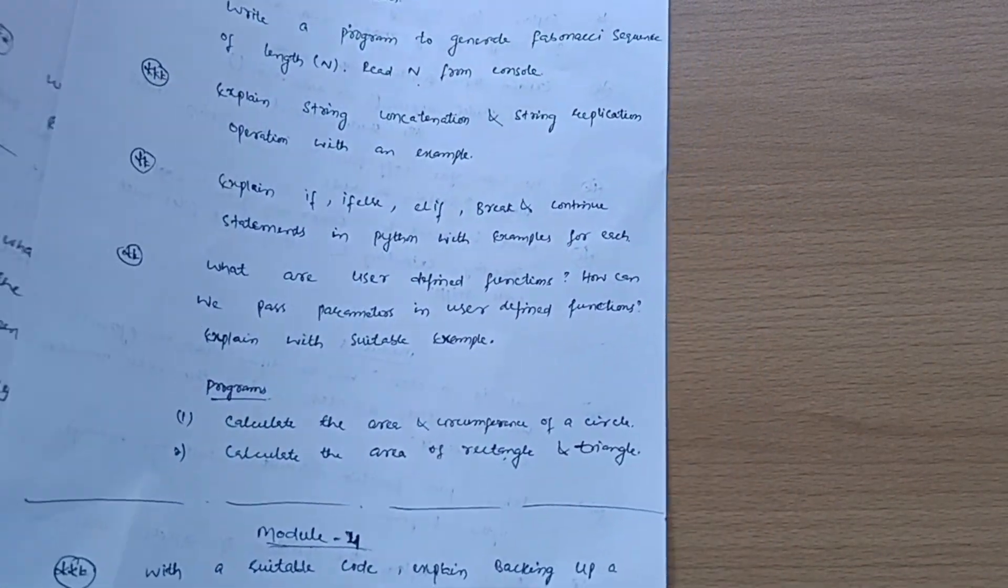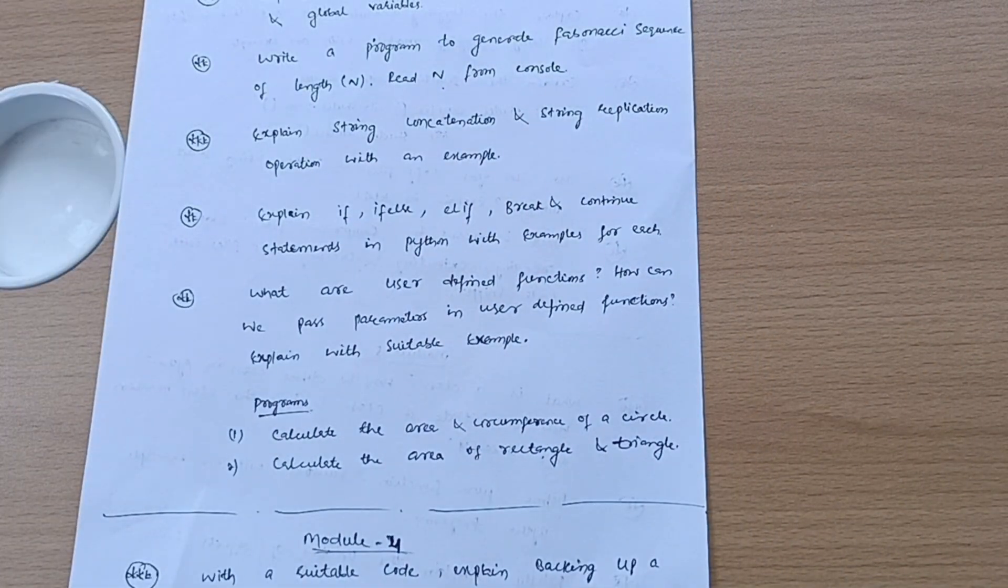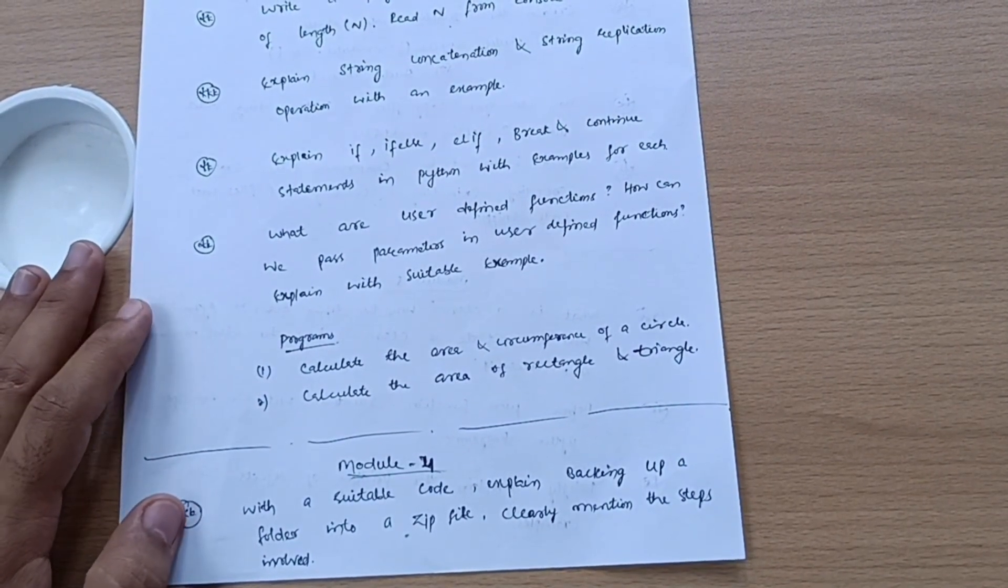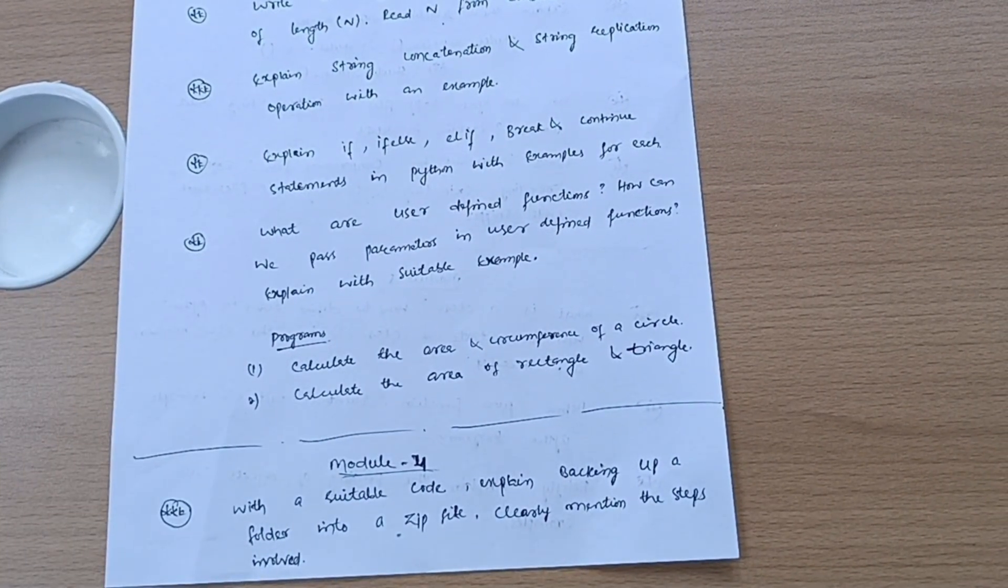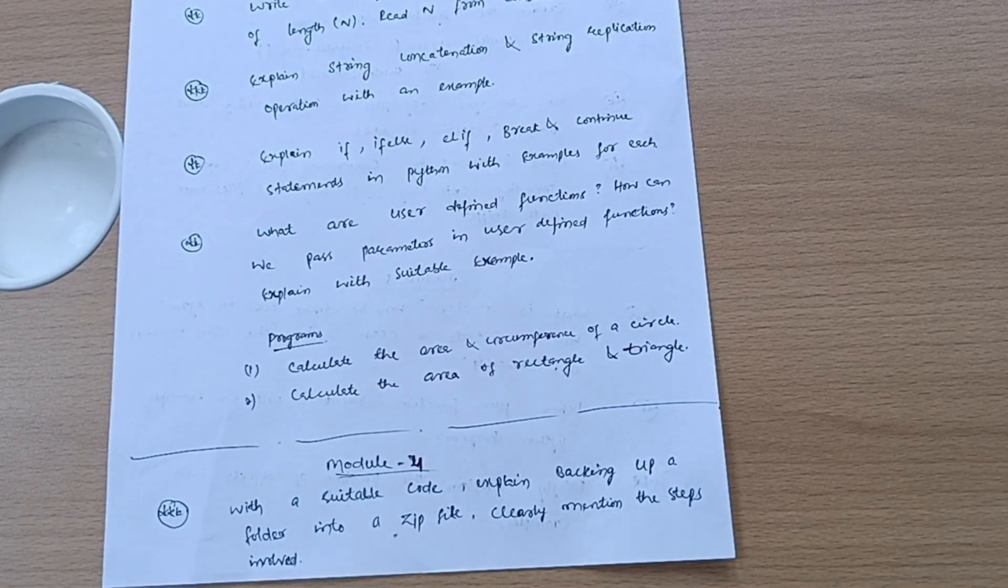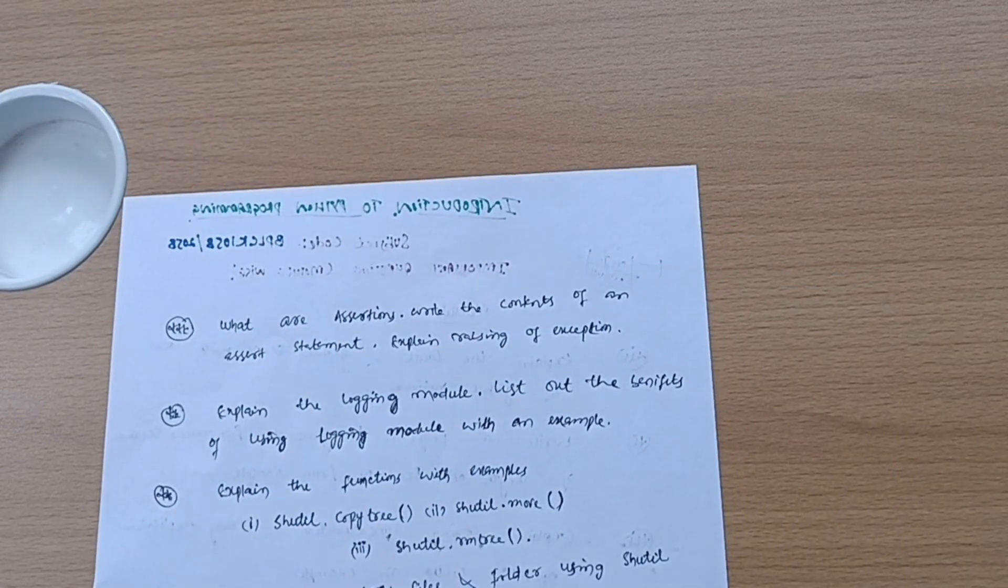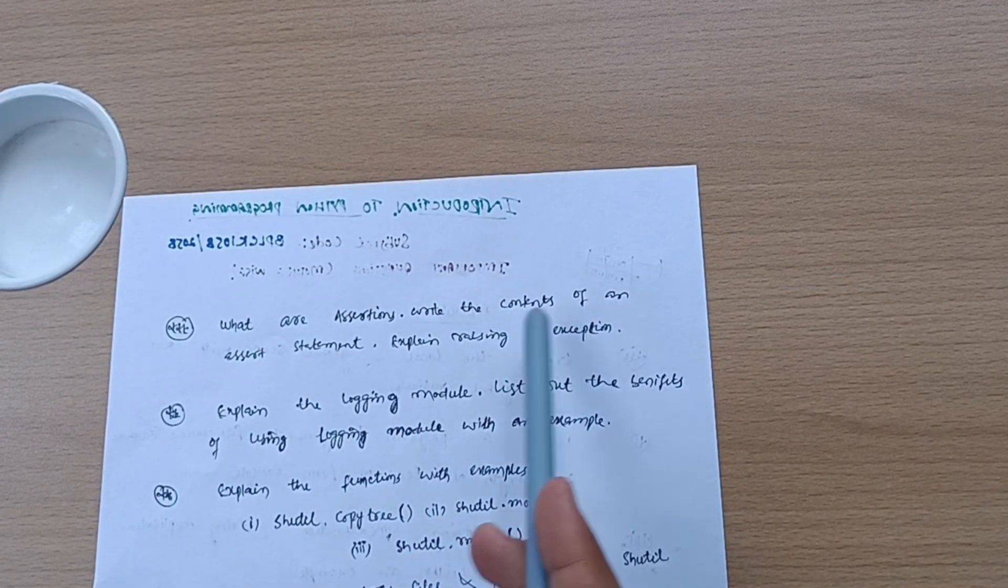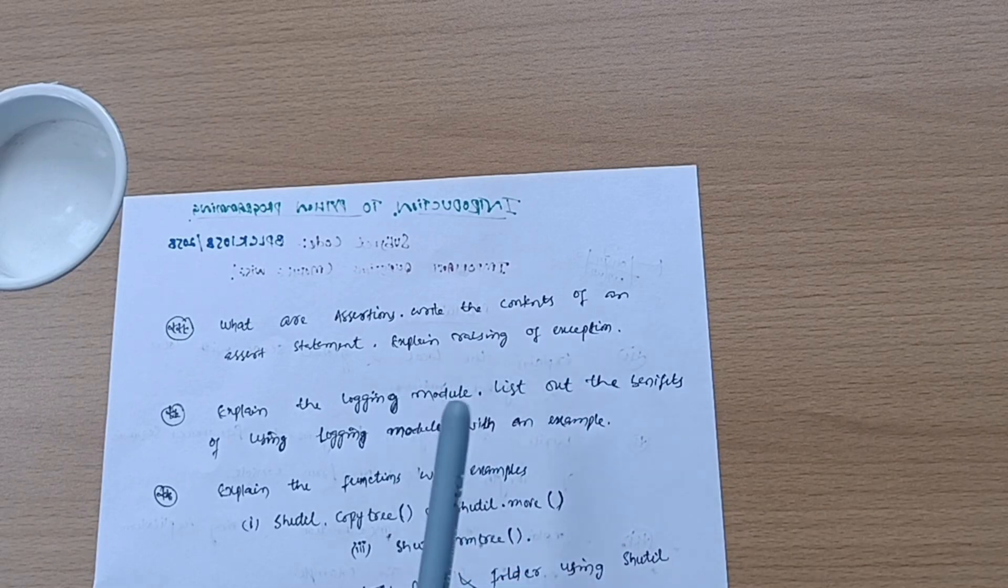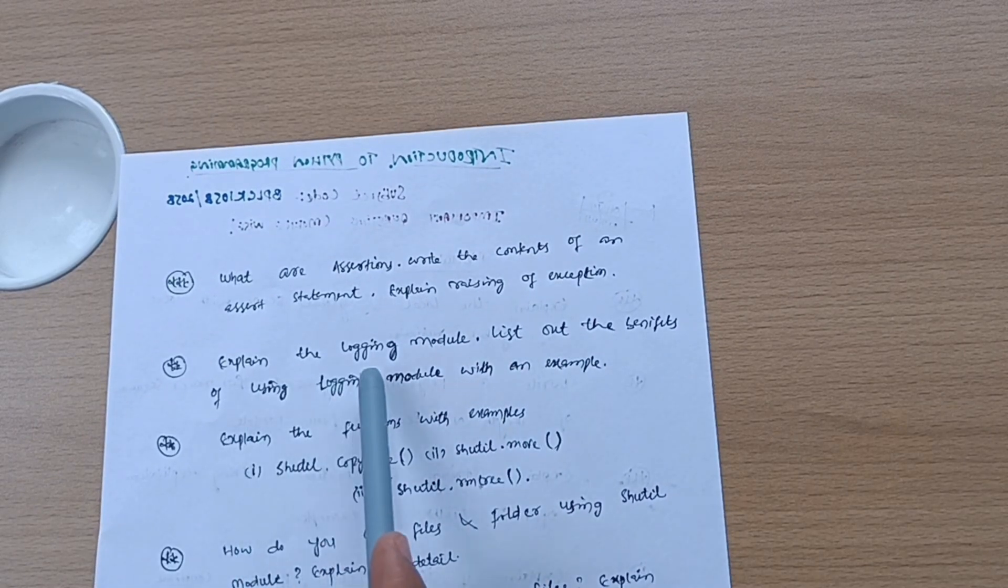Next is Module 4, which is a simple module comparatively with others. Cover important questions like: with suitable code explain backing up a folder into a zip file, clearly mention the steps involved. What are assertions? Write the contents of an assert statement. Explain raising of exception.